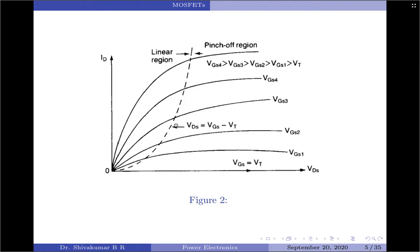It should be noted that saturation has the opposite meaning to that in bipolar transistors. At higher drain current, the voltage drop across the channel resistance tends to decrease the channel width at the drain drift layer end. In addition, at large values of electric field produced by large VDS, the drift velocity of free electrons in the channel tends to saturate. As a result, the drain current becomes independent of VDS and can be determined solely by VGS. This is the active mode of operation of the MOSFET.